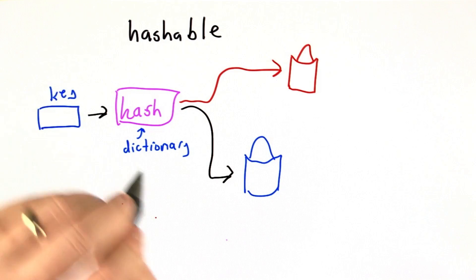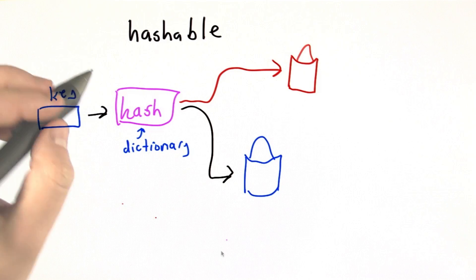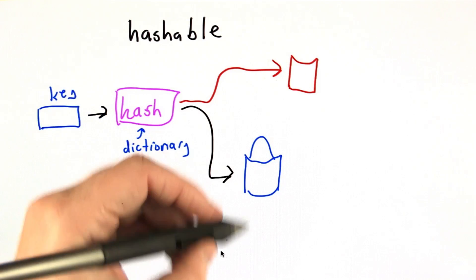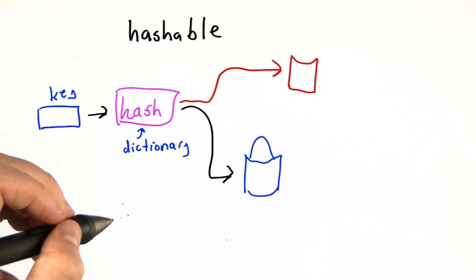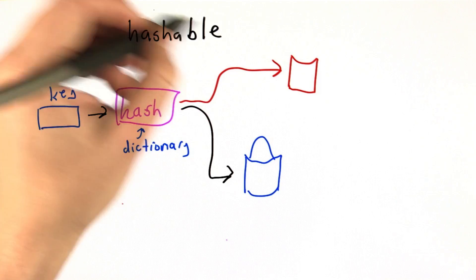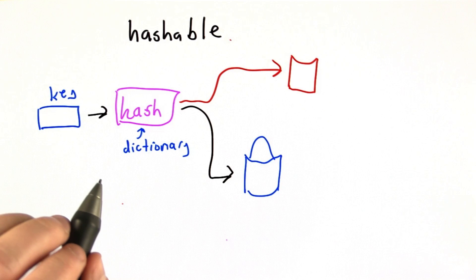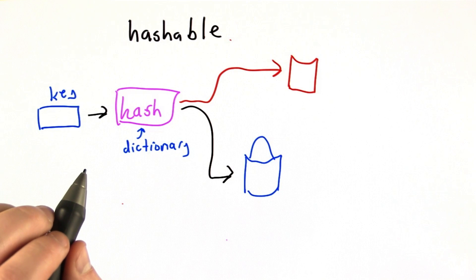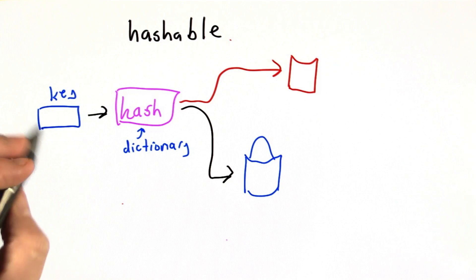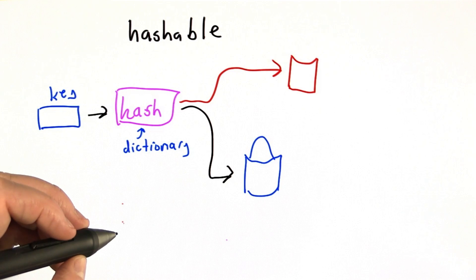That's the same thing for sets. If the value of an item could change, that would break the representation of the set.